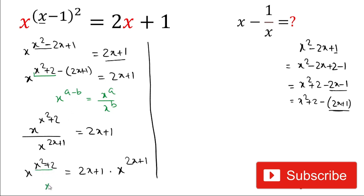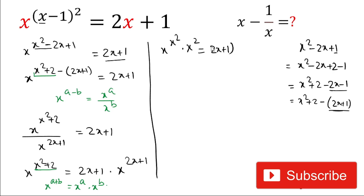Since the power is now in plus, we apply x^(a+b) = x^a · x^b to distribute it. So: x to the power x² multiplied by x² (i.e., x to the power 2) equals (2x+1) multiplied by x to the power (2x+1).